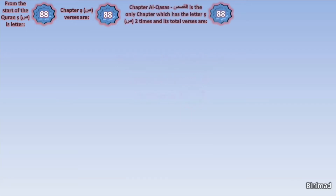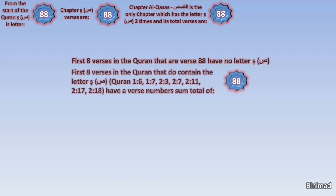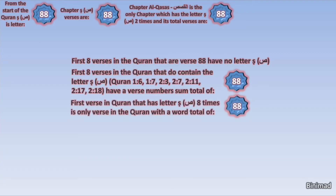Digging even deeper, we realize that the first eight verses in the Quran that are verse number 88 in their chapters contain no mention of the letter Saad, while the first eight verses in the Quran that do contain the letter Saad have a verse number sum total of 88. And the first verse in the Quran to contain the letter Saad eight times is the only verse in the entire Quran which contains 88 words.